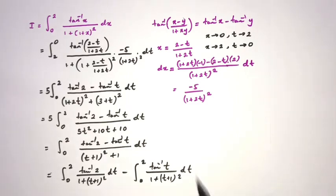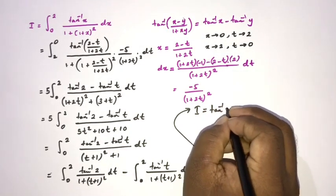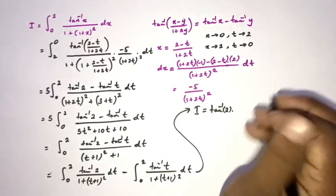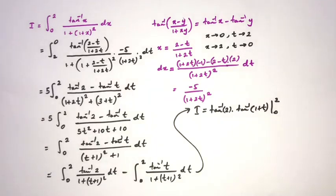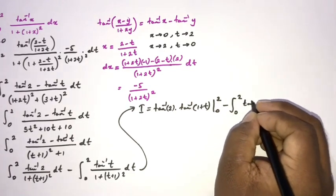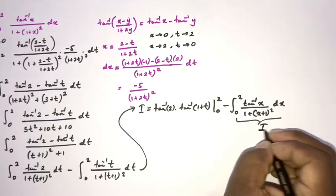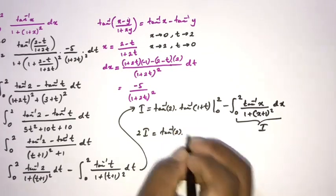Calling our original integral I: inverse tan 2 is a constant, so it comes outside the integral. We integrate 1 over (1 plus (t plus 1) squared), which gives inverse tan of (t plus 1), evaluated from 0 to 2. For the second integral, since the definite integral is independent of the variable name, we replace t with x, giving the integral from 0 to 2 of inverse tan x over (1 plus (x plus 1) squared) dx — which is exactly our original integral I.